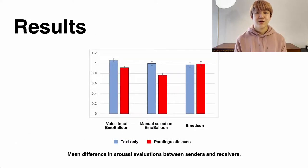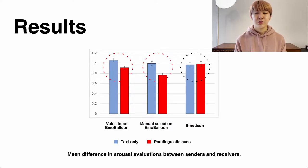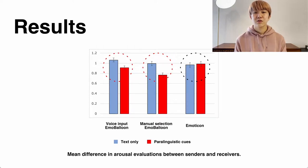As a result, when analyzing the difference in arousal evaluations between a message sender and a receiver, using either the voice input or manual selection Emo Balloon to convey emotional arousal significantly increased the agreement compared to text chat without any paralinguistic cues, while Emoticons did not show such a result. From these results, we found that Emo Balloon was a more effective method to convey emotional arousal in text chat than traditional emoticons.